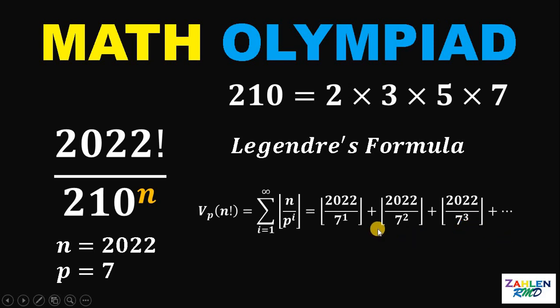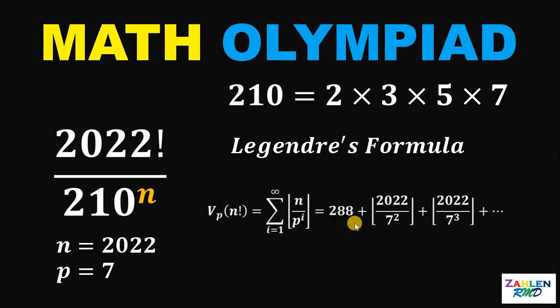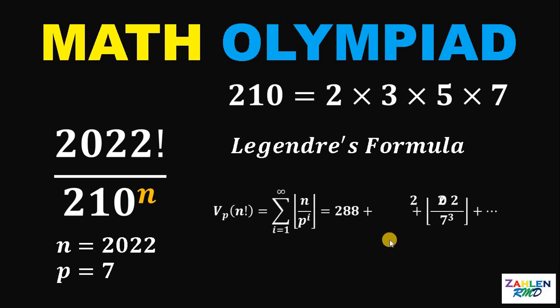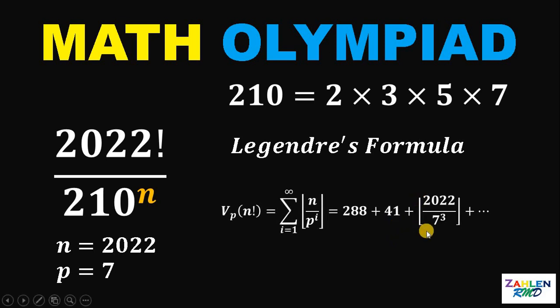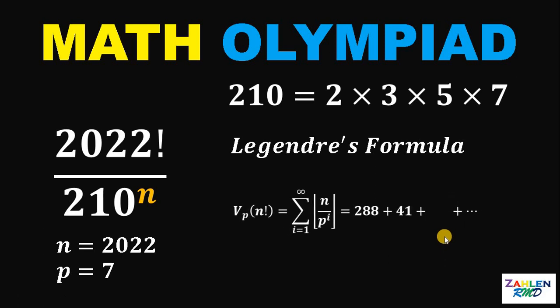Let's simplify. The floor value of 2022 over 7 is just 288. The floor value of 2022 over 49 or 7 squared is just 41. The floor value of 2022 over 7 cubed is just 5.